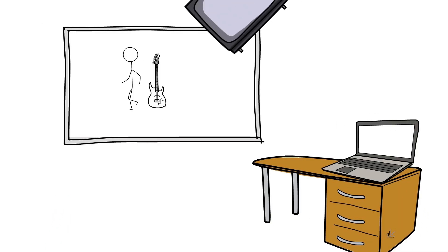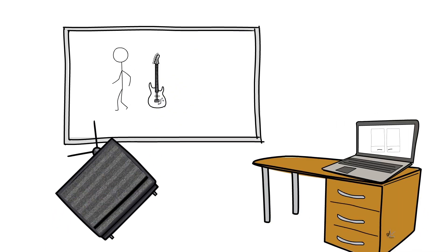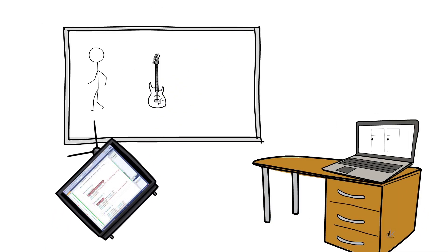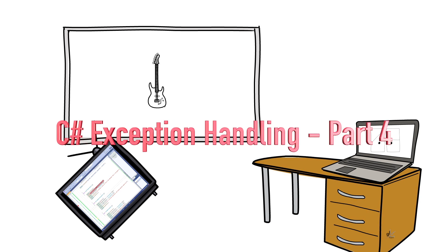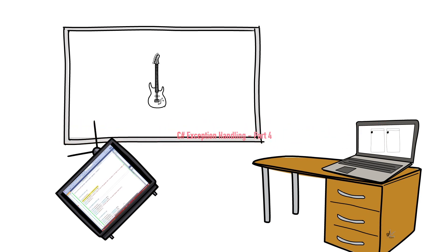Recording exception information in a text file can be very useful for troubleshooting an application when the application is being developed and also after the application has been released into the production environment.